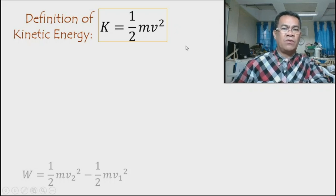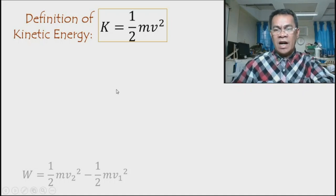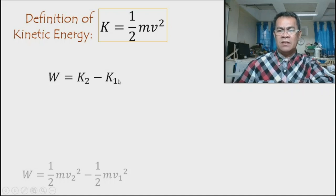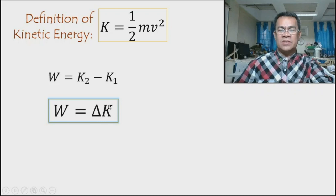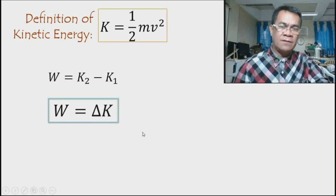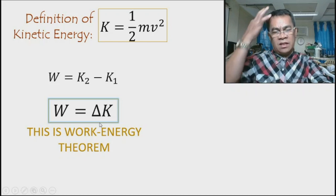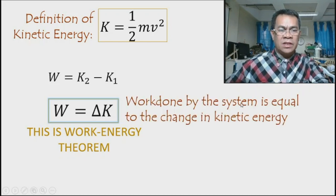Kinetic energy is always positive regardless of direction, because when you square the velocity the result is always positive. So the result is: work done by the system equals the change in kinetic energy — K₂ minus K₁, where K = ½mv². This is the work-energy theorem: work done equals the change in kinetic energy. They are equal.